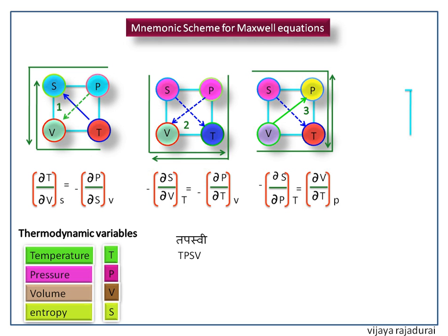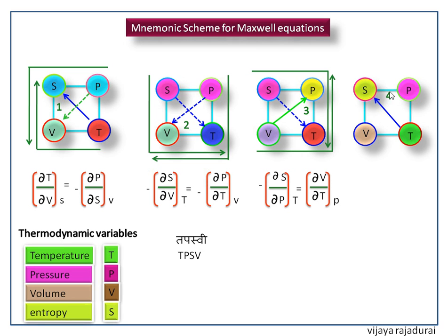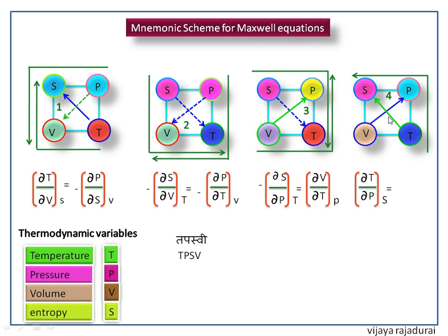Next we write the last equation. Here we are going to consider the upside of the square marked as 4. Draw a diagonal towards 4. This is upward direction so we get a positive sign on the left side — partial derivative of T with respect to P at constant S is equal to. Here also we have upward direction so we get a positive sign — partial derivative of V with respect to S at constant P.